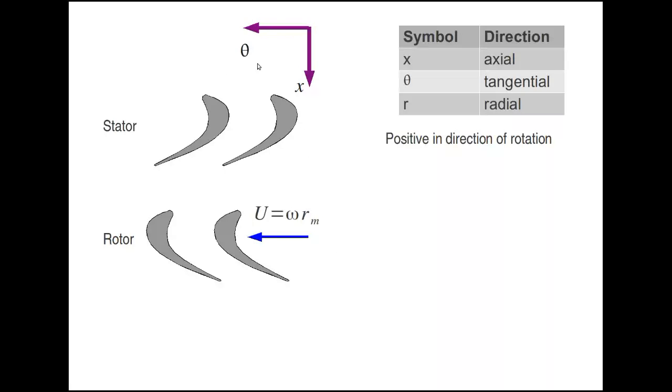We then have the tangential coordinate Theta. This Theta again is positive in the direction of rotation. The rotor is rotating from right to left on this diagram, so Theta is going to point from right to left as well. That's our cascade view.